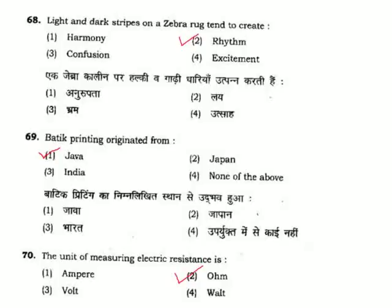Question 69: Batik print originated from — batik print originated from Java, in the area of Indonesia and Thailand. Option 1. Question 70: The unit of measuring electric resistance is — that is Ohm. Option 2.